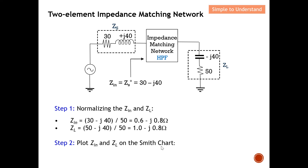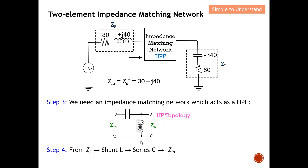Step 3: the impedance matching network must act as a high-pass filter, which requires a series C and a shunt L configuration. The series element is on the left-hand side because the gun always points toward the smaller value — comparing the two resistor values, 30 is smaller than 50, so the series C is in that direction. This gives us the high-pass filter impedance matching network.